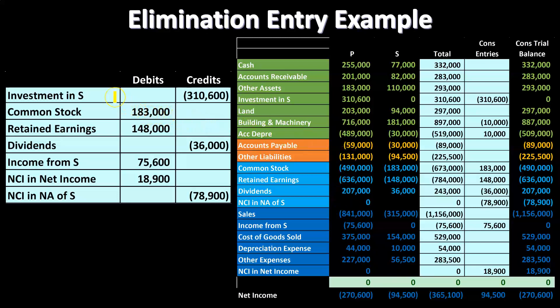Here is an example of an adjustment — note this is a long adjusting entry. We have the parent company, the subsidiary, and the consolidation adding the parent and subsidiary trial balances together. Then, as we've seen before, we remove the investment in S — that gets eliminated. We also remove the equity section for S: the 183, the 148, and the 36.